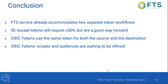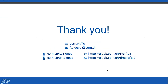For OIDC tokens, we use the same token for both the source and the destination, and this is something we have to see — whether the token evolution in WLCG will make this good enough or whether we'll have to change it. What we're waiting on — and Martin actually mentioned the WLCG authorization working group — is to refine how FTS uses scopes and audiences. For the moment, we're waiting on a decision on how to refine them. Thank you for listening, and if you have any questions, go ahead.